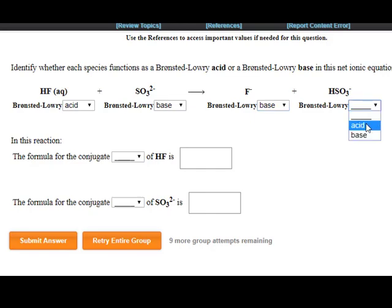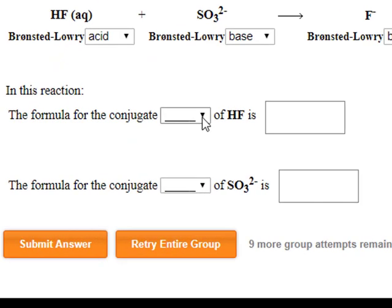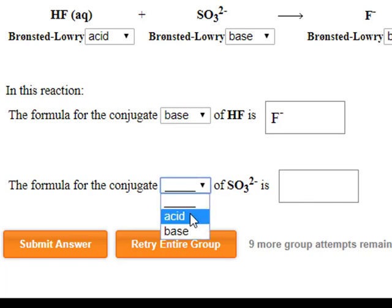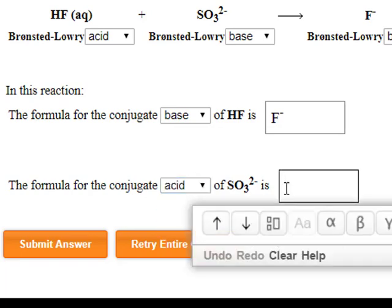And therefore this is the conjugate acid of SO3 2 minus. So the conjugate base of HF is fluoride, and the conjugate acid of sulfide, in this case, is HSO3 minus.